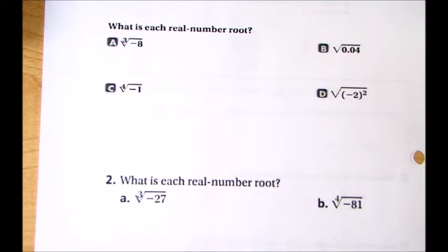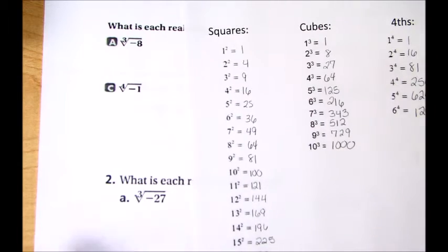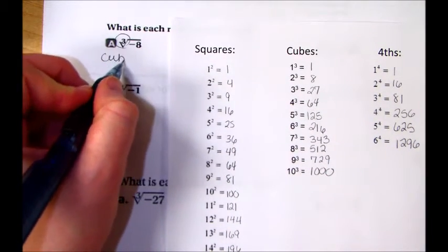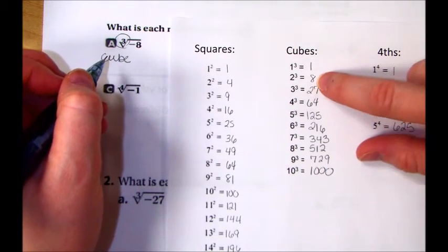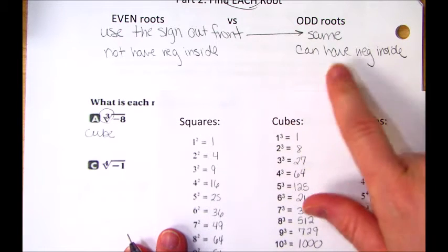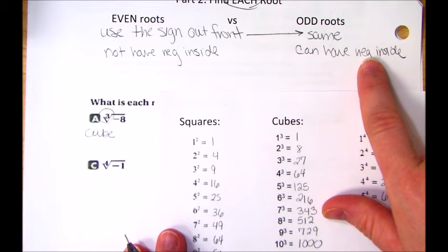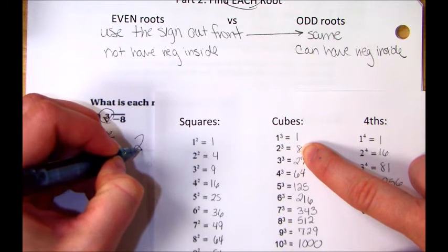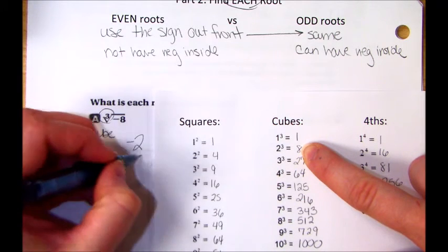So I'm going to get my list for part A, and they want me to go to the cube list. You can see there's a cube out there. I'm going to find eight. Just like my rules indicated up above, odds are allowed to have a negative inside. The cube root of eight is two, but the cube root of negative eight is negative two.